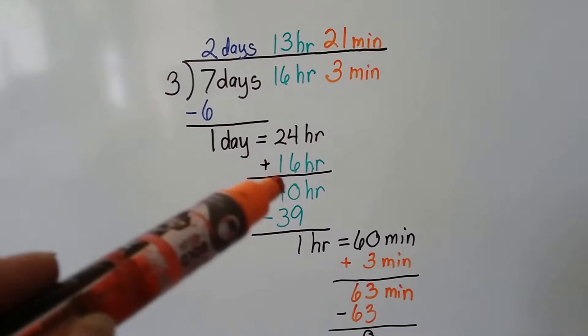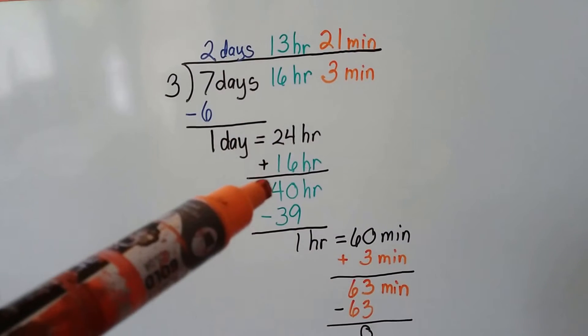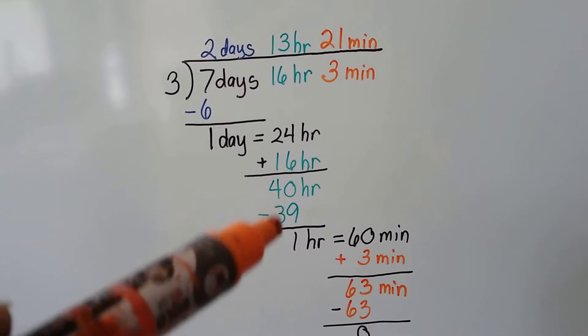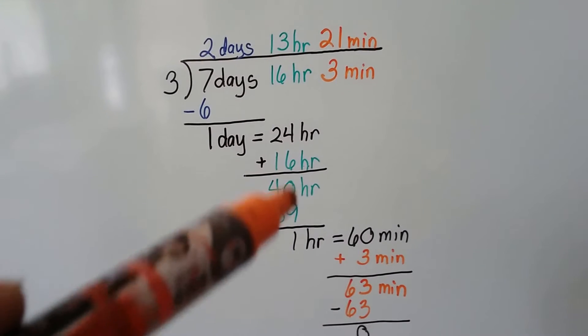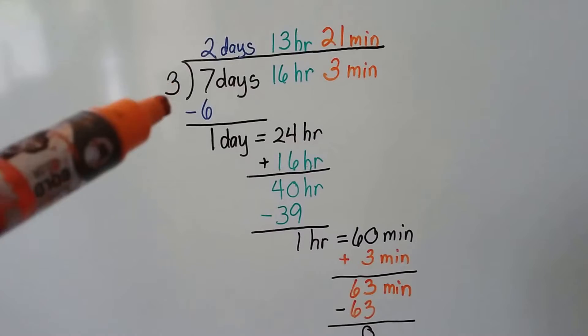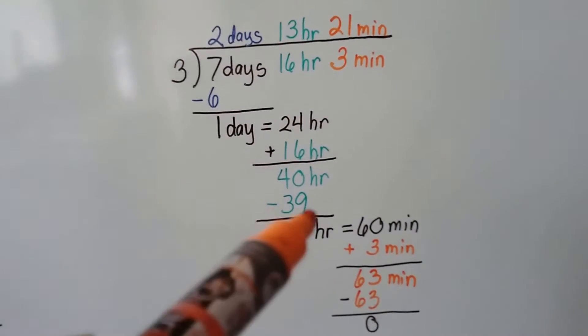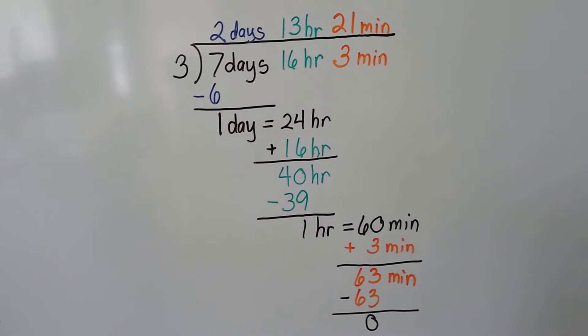You could even go slower and say 3 goes into the 4 one time, and that leaves 1 left over. So that would be a 10 because of that 0. And then we would say 3 goes into 10 three times. But 3 times 13 is 39. So I did it a little quicker.